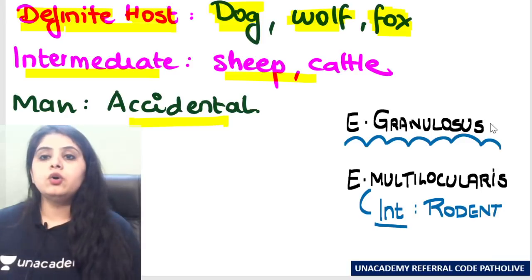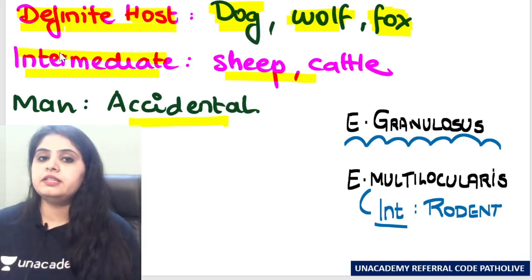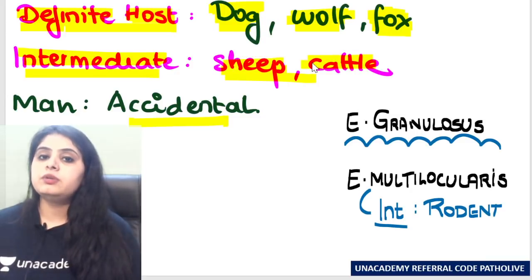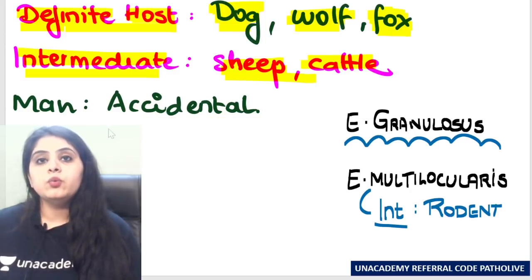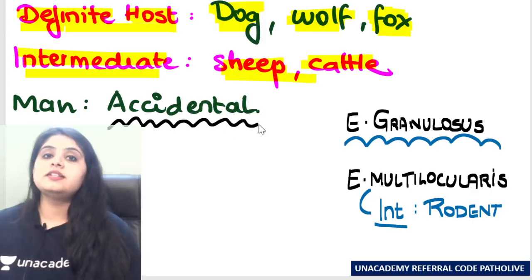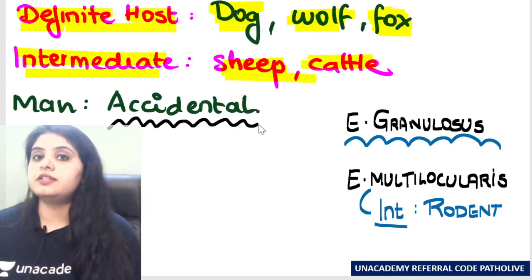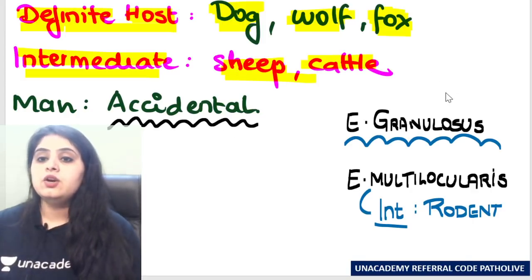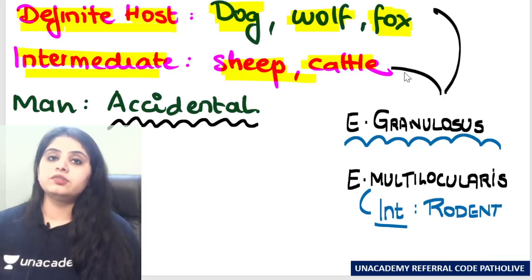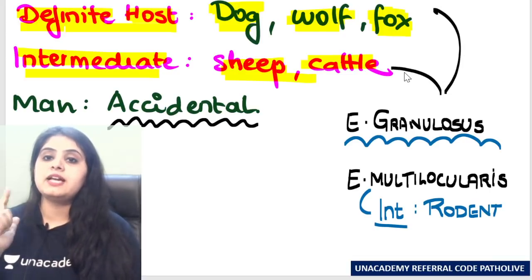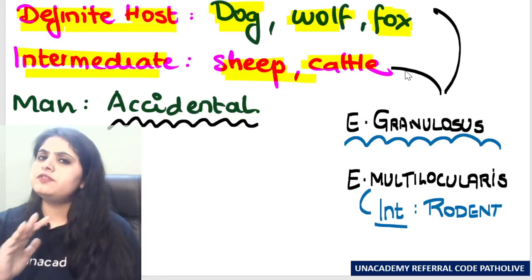So remember: dog, wolf, and fox are the definitive hosts. Intermediate hosts in these cases will be sheep or cattle. We humans are only the accidental hosts — we are accidentally infected. This is the story of Echinococcus granulosis: dog is definitive, sheep and cattle are intermediate.